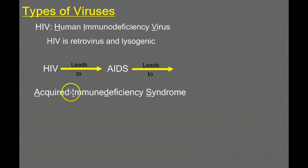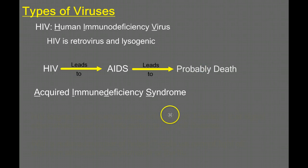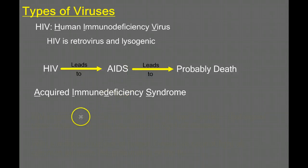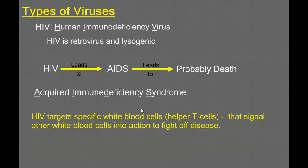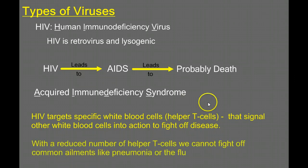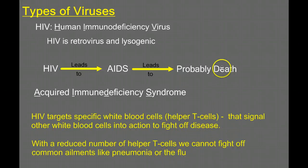We've acquired this virus that is making your immune system deficient, and that is serious because it leads to probable death. HIV doesn't kill you directly, and AIDS while it directly doesn't kill you either, it leads to your death. Because the HIV viruses target specific white blood cells called helper T cells, whose job is to tell the other white blood cells to become active to fight off common diseases. Eventually, HIV leads to AIDS because your helper T cell count is so low that you can't fight off things like pneumonia or the flu, and due to that weakened immune system, you die.